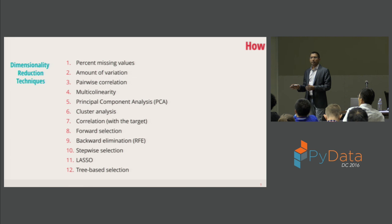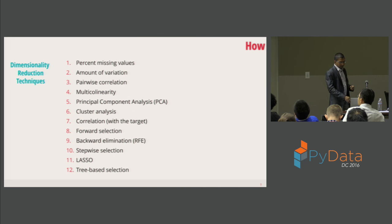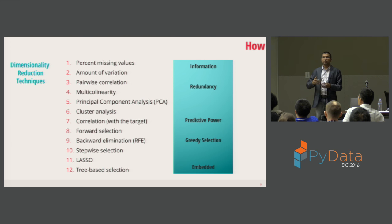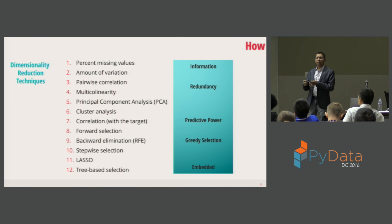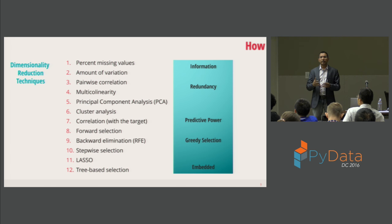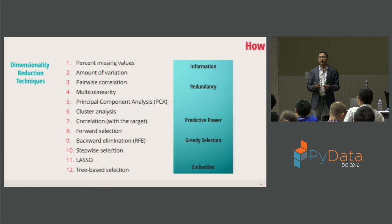These are the 12 techniques I'll talk about, spending about two and a half minutes on each. They fall into four or five categories: first, simple techniques that evaluate each variable by itself to see how much information it brings; then looking at pairs of variables to identify redundancy; then predictive power — how correlated variables are with the target; then greedy selection techniques — forward selection, backward elimination, and stepwise; and finally, embedded methods.